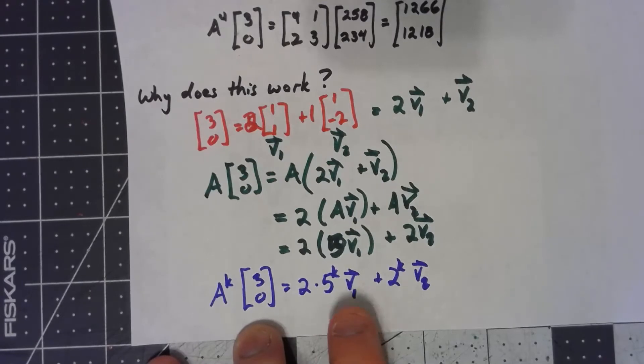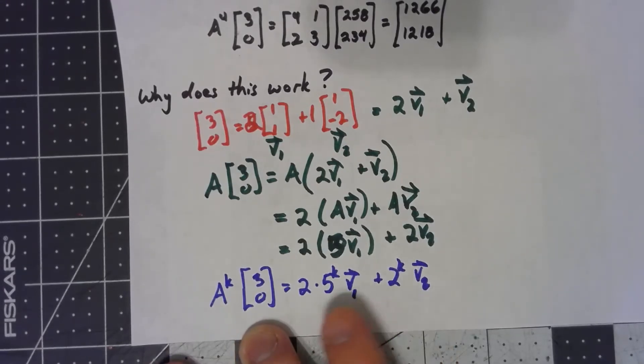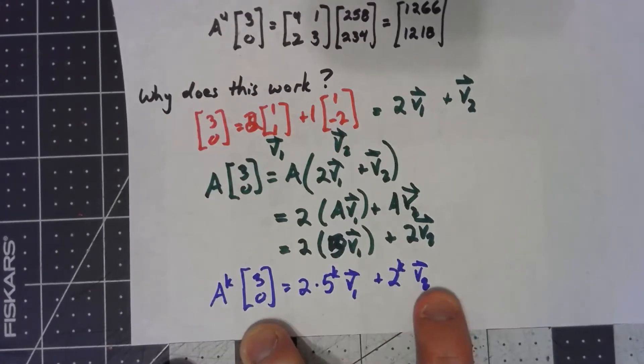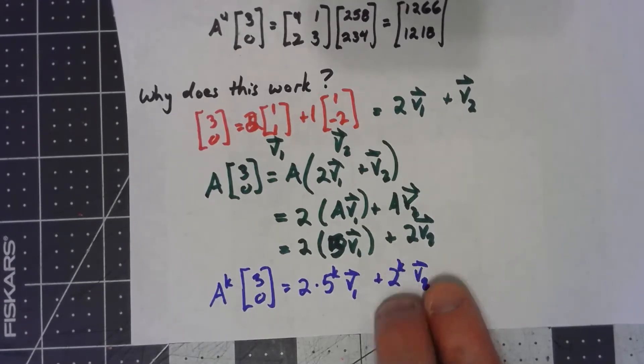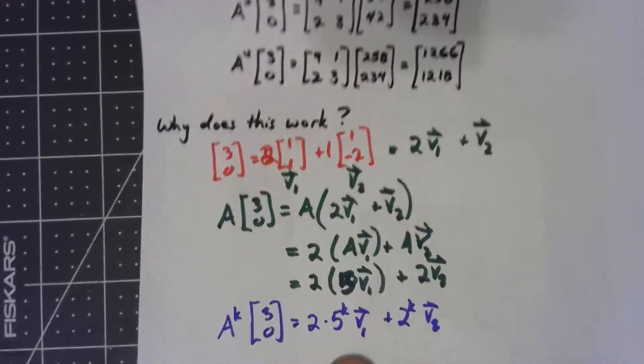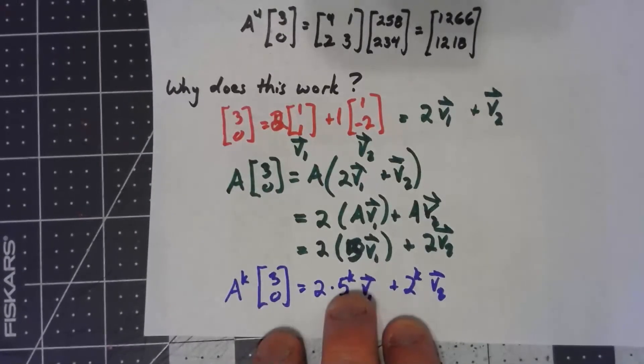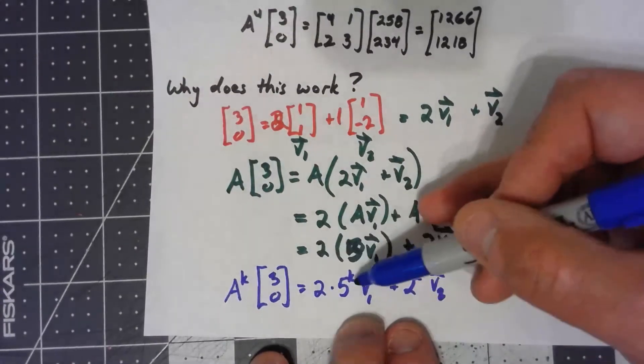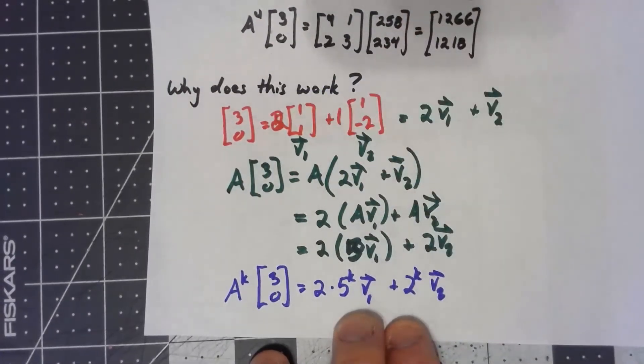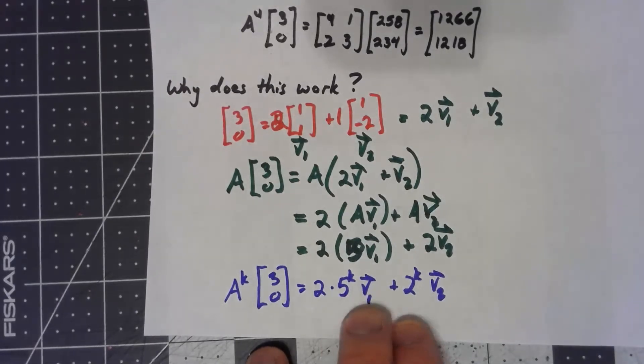So you can see, as I do this over and over again, this 5 to the k factor starts overwhelming the 2 to the k factor. This is growing so much faster than this, this is becoming insignificant. We'll go ahead and prove that and show exactly when this happens in the next video. So you can see for this example, anyway, this becomes the dominant term. And so we're getting closer and closer to this kind of thing. We're getting closer and closer to 2 times 5 to the k times [1, 1]. The entries have to be getting closer and closer together.